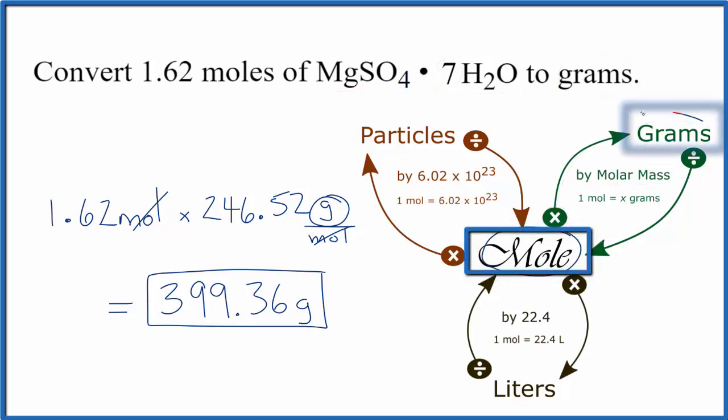So to recap, we had moles and we wanted to find grams, so we multiplied by the molar mass for MgSO4·7H2O. If you were given grams and asked to find moles, you'd start with grams and divide by the molar mass, and that would give you moles.